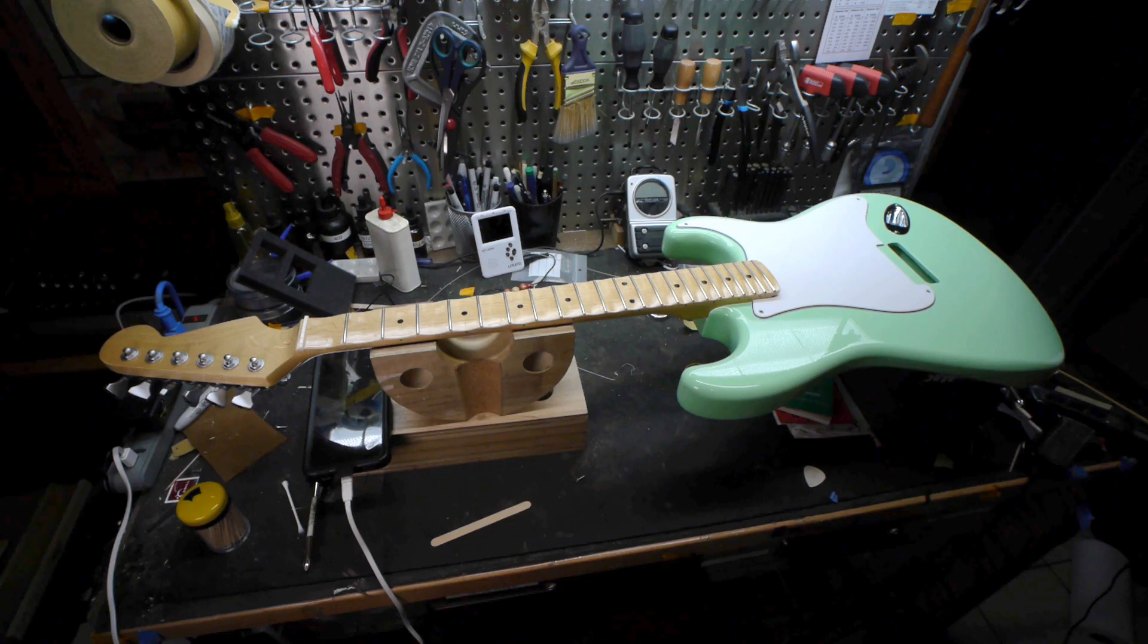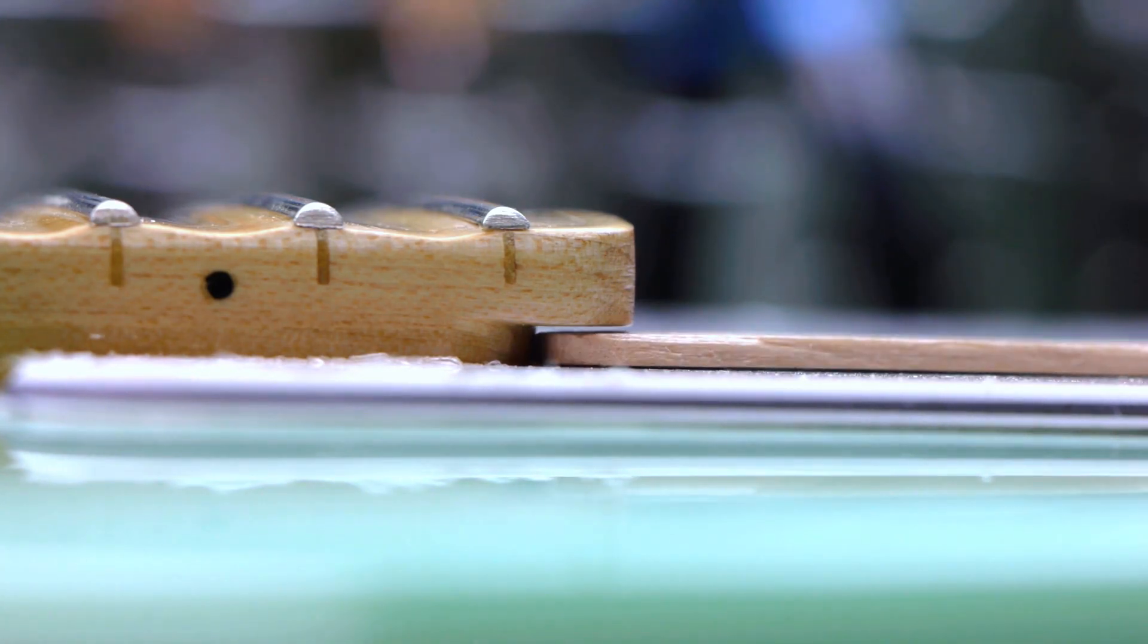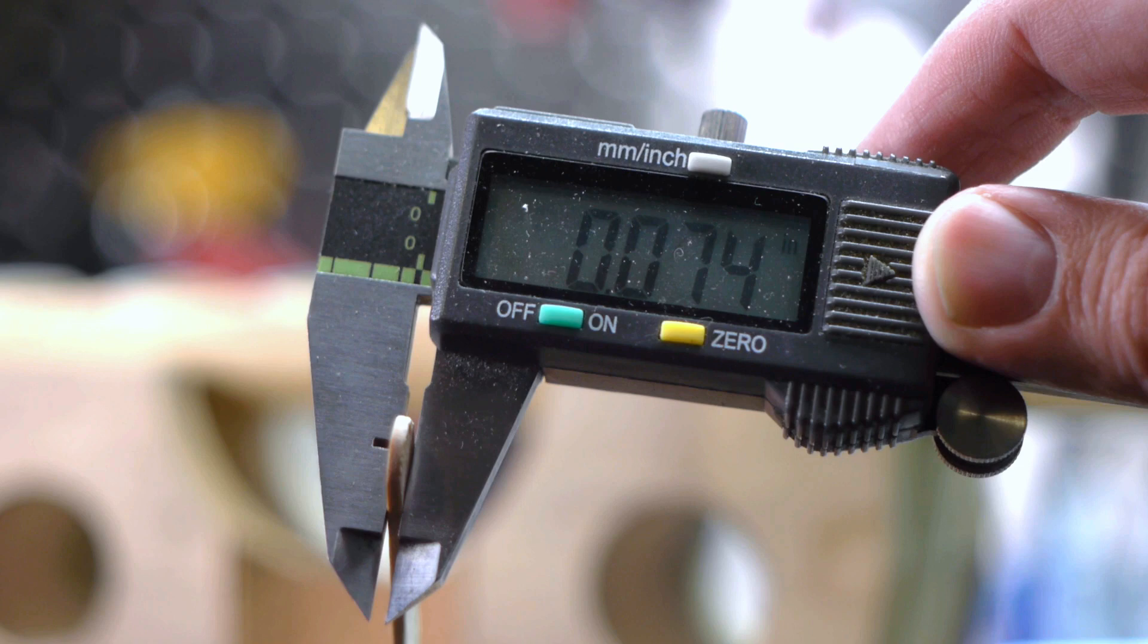This Partscaster was coming along okay until a problem became apparent. The fingerboard extension is so high above the pickguard you can easily fit a popsicle stick under it. That's almost 80 thousandths of an inch.